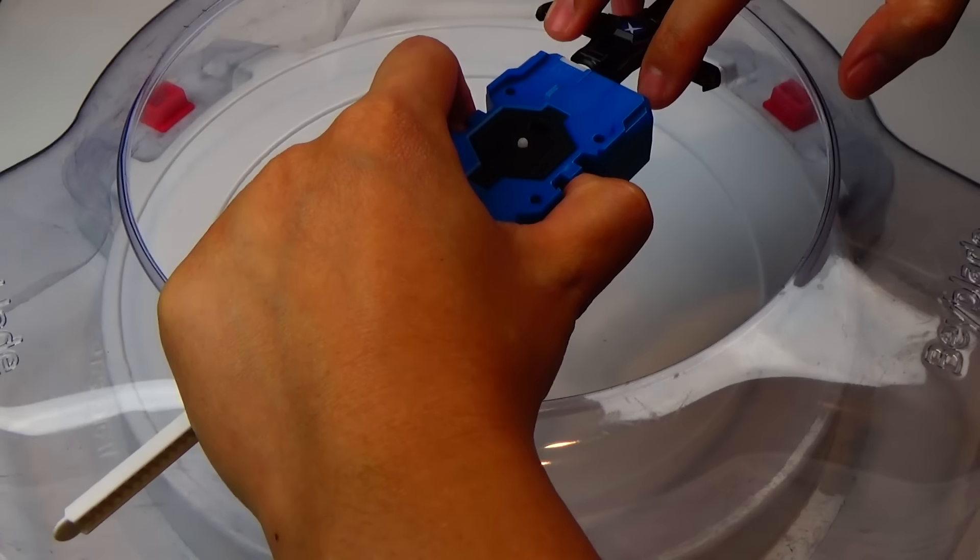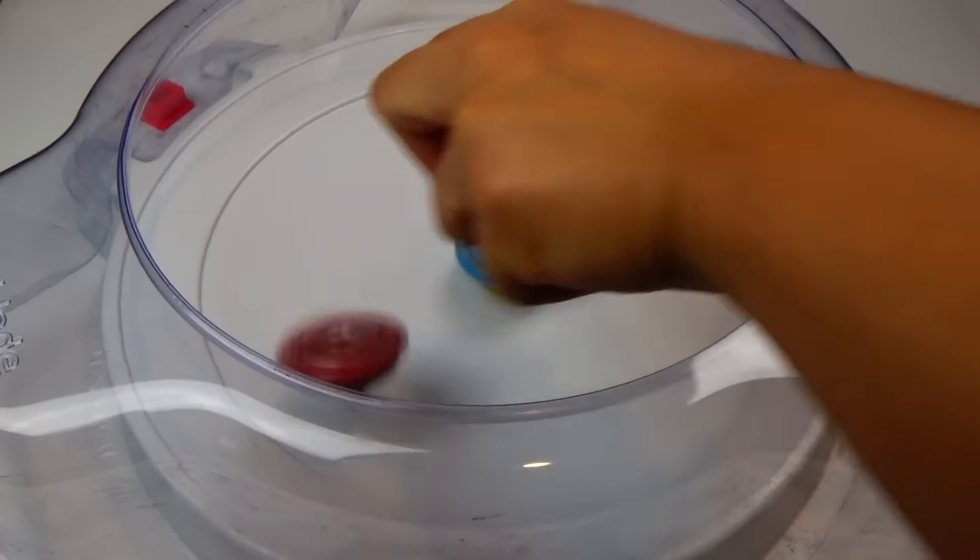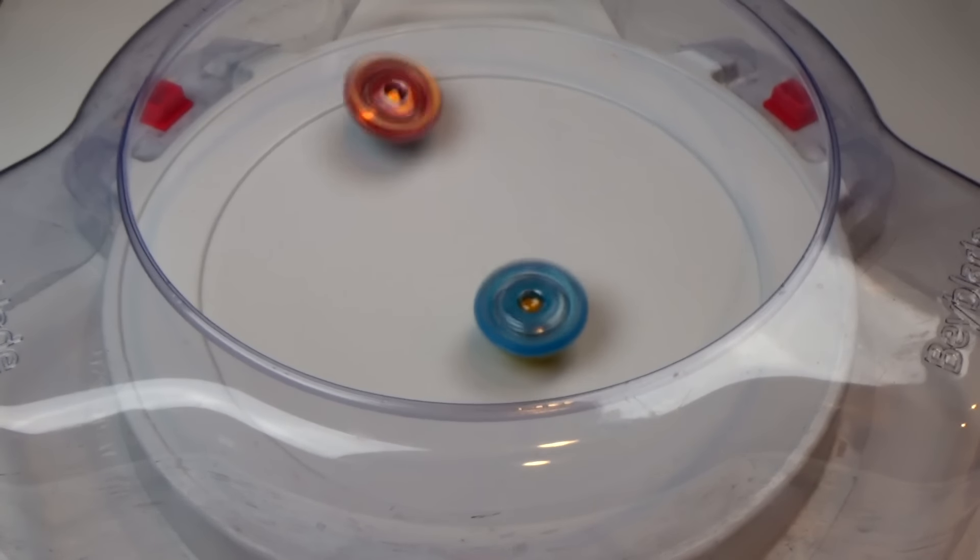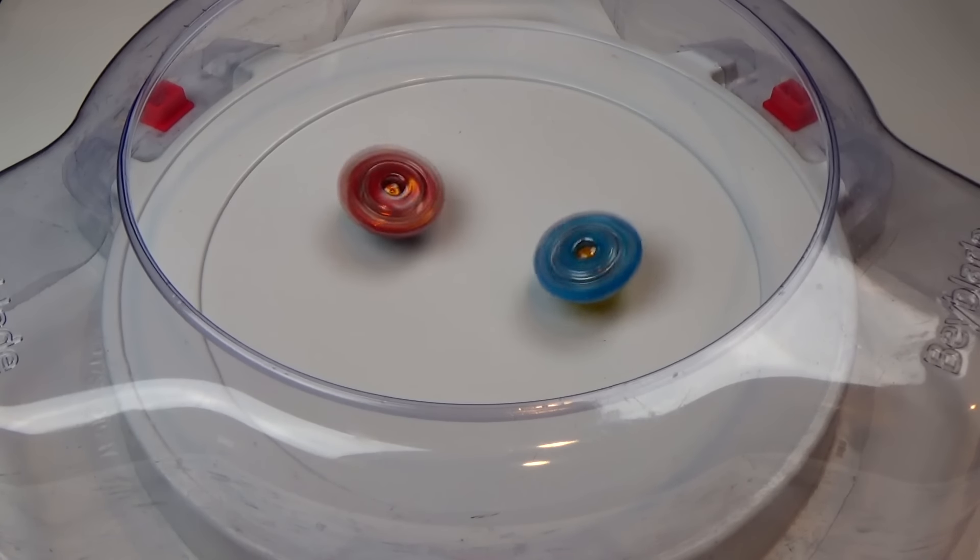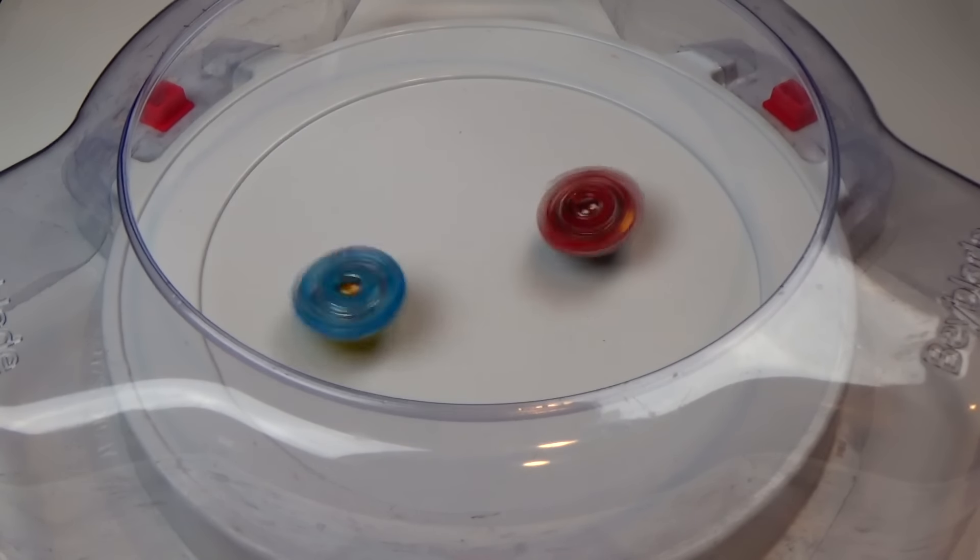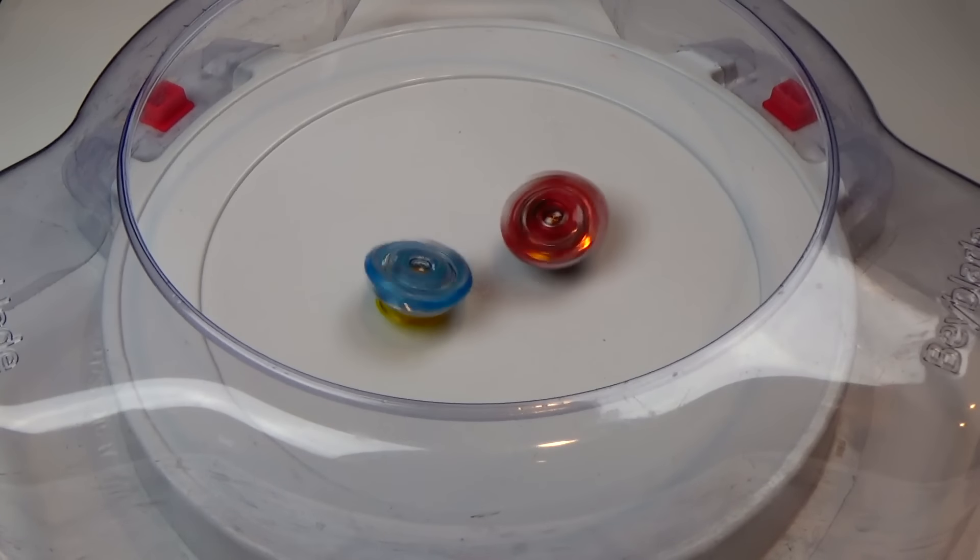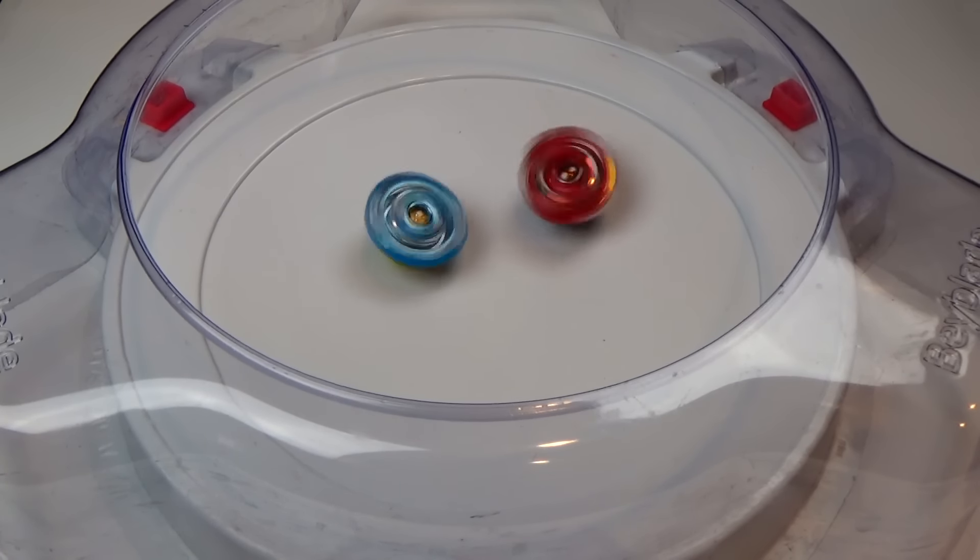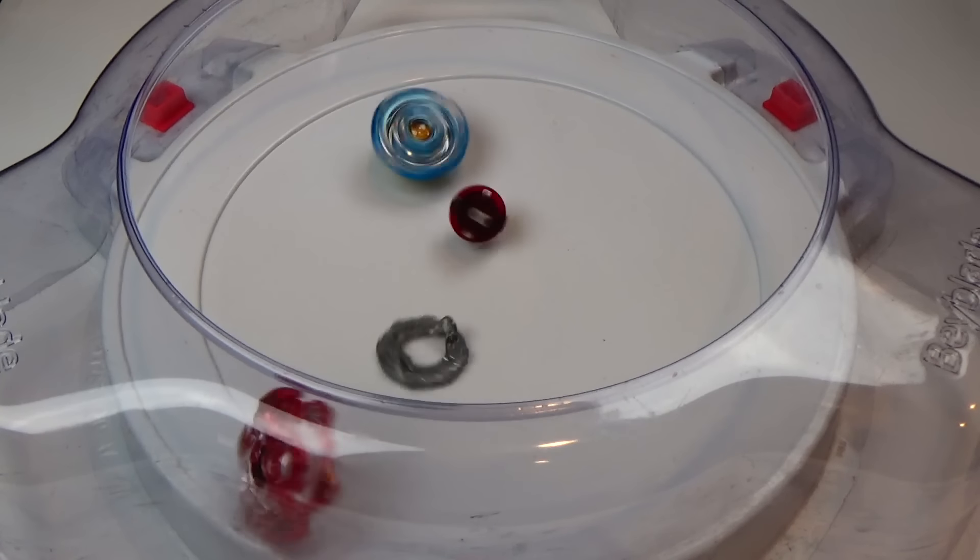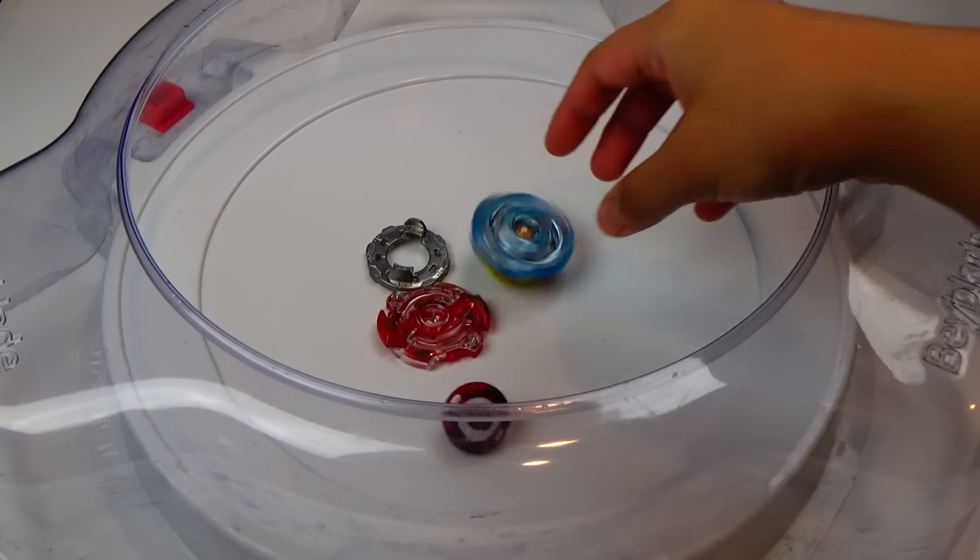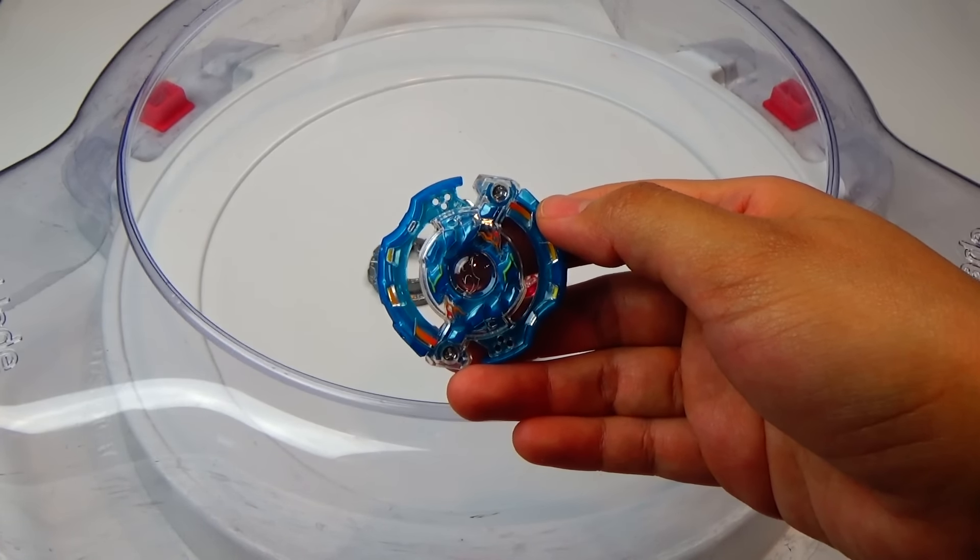Round one. Three, two, one, go shoot! Got some pretty good hits coming from Storm Spriggan. Spriggan! Oh, and we end up in a Burst! J2 gets two points for the Burst finish.